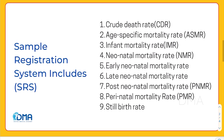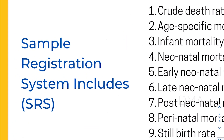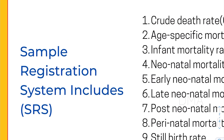The topic that we're going to cover today is the Sample Registration System. The Sample Registration System is a large-scale demographic survey that provides reliable annual estimates of death rate, birth rate, infant mortality rate, and some other fertility indicators as well.